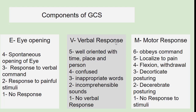For verbal response: if the patient is well-oriented with time, place, and person, the score is 5. If the patient is confused, score is 4. If responding with inappropriate words, score is 3. If making incomprehensible sounds, score is 2. No verbal response scores 1. For motor response: obeying command scores 6, localizing pain scores 5, flexion or withdrawal to pain scores 4, decorticate posturing scores 3, decerebrate posturing scores 2, and no response to stimuli scores 1.